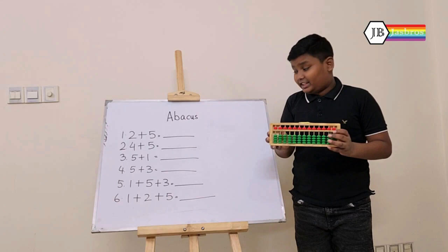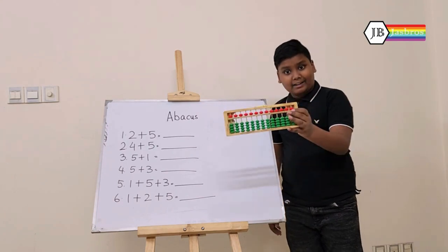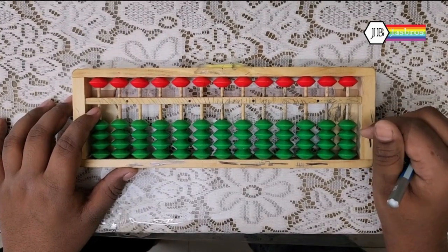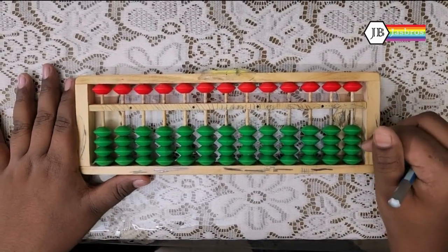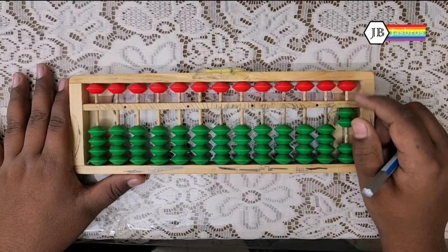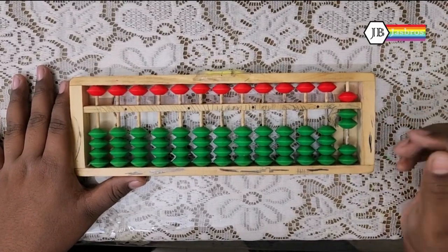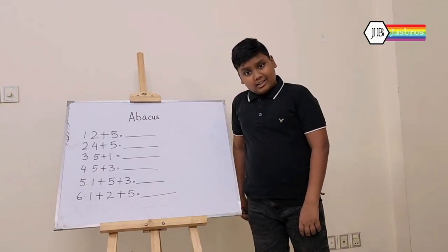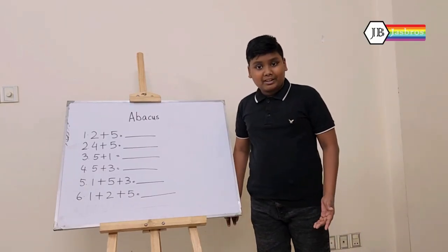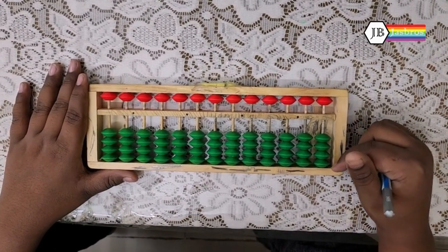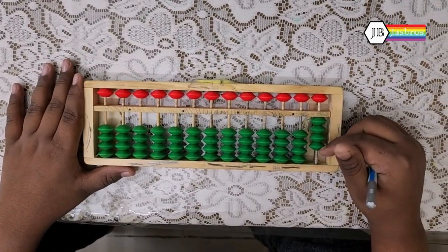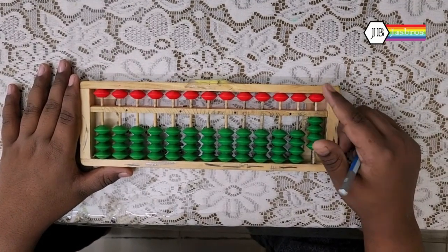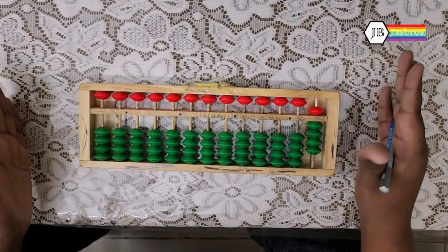Now we are going to do these sums with an abacus. So the first sum is 2 plus 5. In our abacus, we will take 2 and then add 5. So the answer is 7. The next sum is 4 plus 5. Let's do that with our abacus. For our first number we have 4, and then we need to add 5. So the answer is 9.